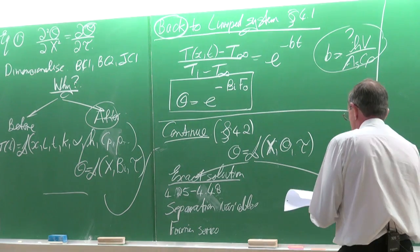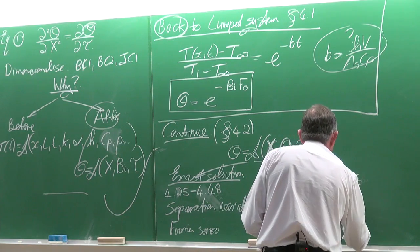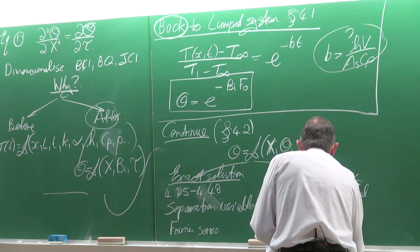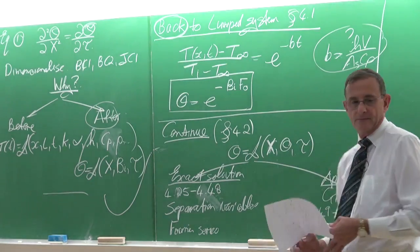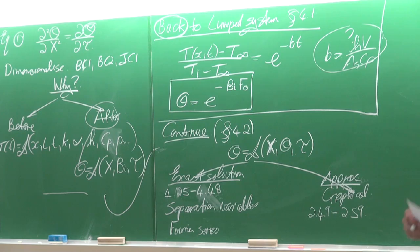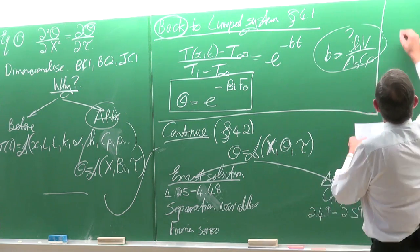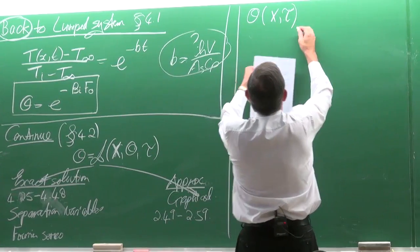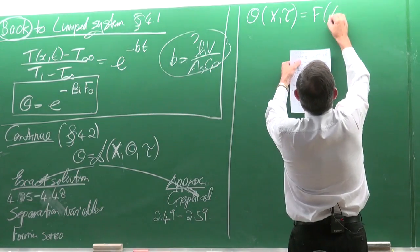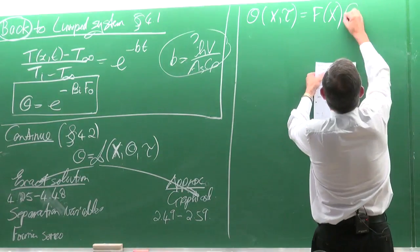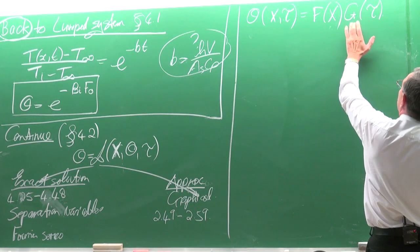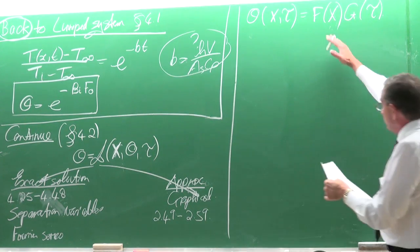For the approximate solution, there is also a graphical solution, with results typically in equations 4.49 to 4.59. In terms of the separation of variables method, you assume θ is a function of X and τ, where that function equals F(x) multiplied by G(τ) — a function only of x times a function only of τ.